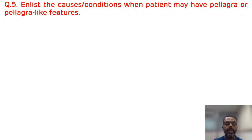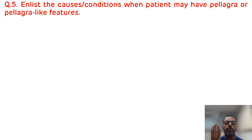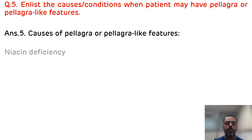The fifth question is: enlist the causes or conditions when a patient may have pellagra or pellagra-like features. The first condition is niacin deficiency — vitamin B3 deficiency. The second condition is if the staple diet is maize or corn. The third condition is if the staple diet is jowar or sorghum. The fourth condition is deficiency of vitamin B6, that is PLP deficiency, so the kynureninase enzyme will not be able to convert tryptophan to niacin. The fifth is Hartnup disease. These are the causes of pellagra or pellagra-like features.